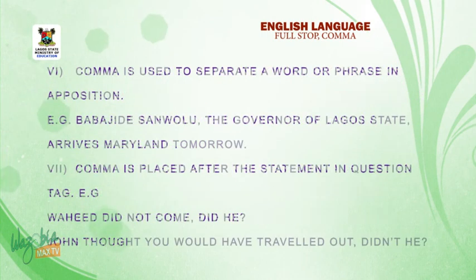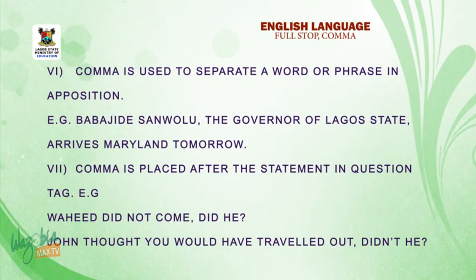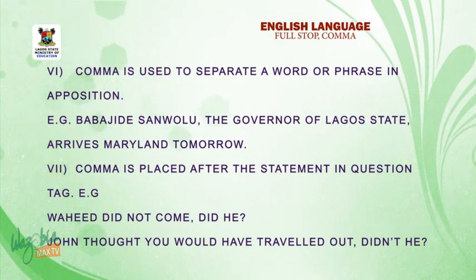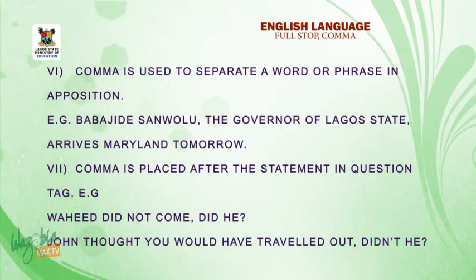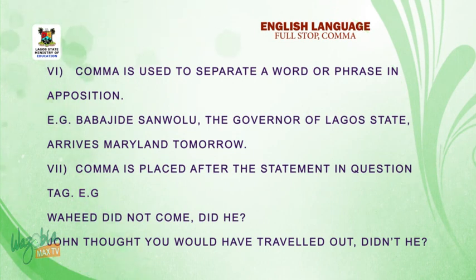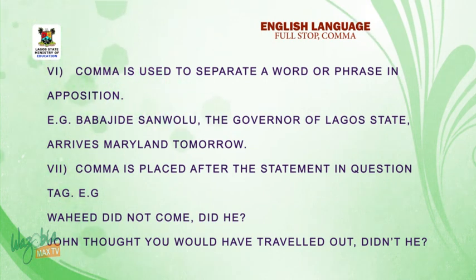Number six: comma is used to separate a word or phrase in apposition. E.g., Babajide Sanwo-Olu, the governor of Lagos State, arrives Mary Lange tomorrow. Number seven: comma is placed after the statement in a question tag. E.g., Wahid did not come, did he? John thought you would have traveled out, didn't he?